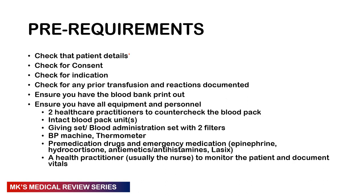The third thing to check is the indication for the transfusion, which should be clear in the file. Check the full blood count — the indication may be severe anemia or a sickle cell patient in acute chest syndrome. Also check if the patient has had any prior transfusions, how well those went, whether vitals were stable, and if any reactions were documented.